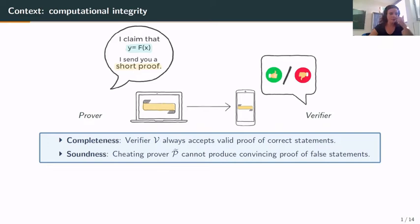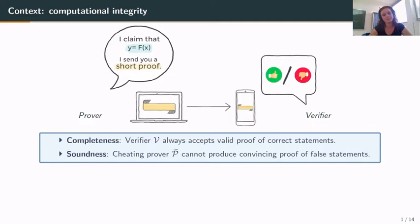In this context, we need two properties. First, completeness: the verifier always accepts valid proofs of correct statements. And we also want soundness: even if the prover cheats, it cannot produce convincing proofs for false statements.